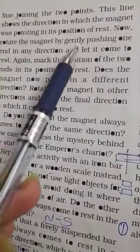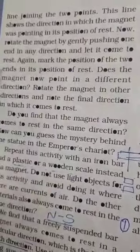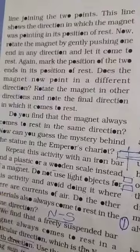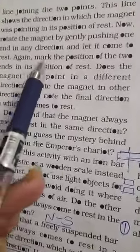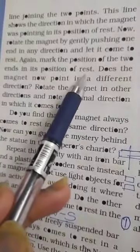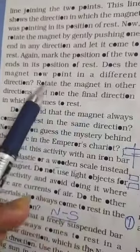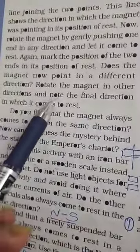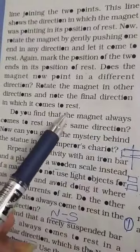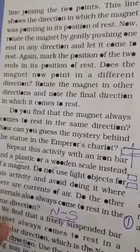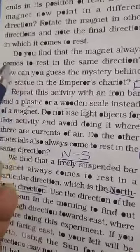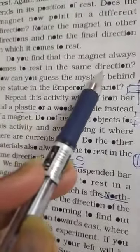Now rotate the magnet by gently pushing one end in any direction and let it come to rest. Again mark the position of the two ends in the position of rest. Does the magnet now point in a different direction?